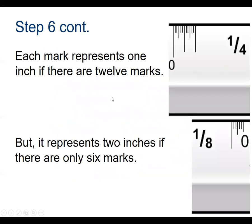Step six: each mark represents one inch in the quarter inch scale because there are 12 marks. But each mark would represent two inches if there are only six marks. On the eighth inch scale, from zero to the end mark you have six marks.